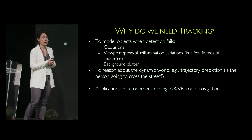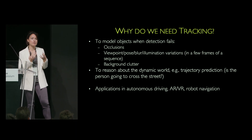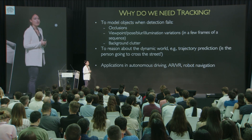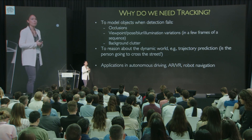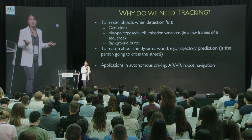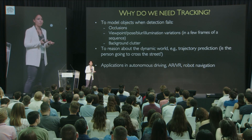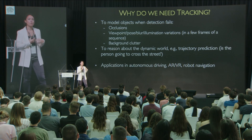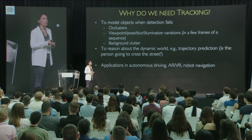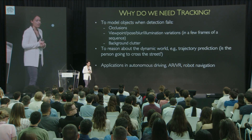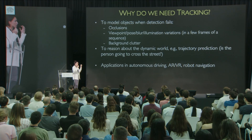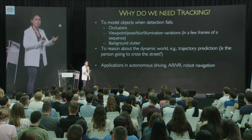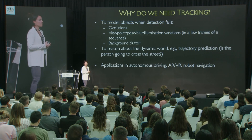We also have problems of viewpoint changes, pose changes, and illumination changes that cause detection to fail, as well as background clutter. But I think the most interesting goal of tracking is to allow us to reason about the dynamic world. The world consists not only of still images but also of dynamic objects, and we want to do prediction. You can imagine an autonomous vehicle detecting a pedestrian and needing to understand whether they will cross the street or continue down the sidewalk. This is core technology for autonomous driving, AR/VR, and robot navigation.